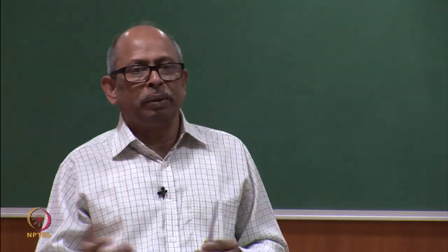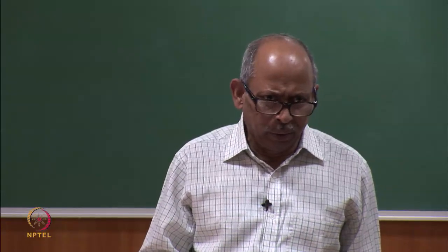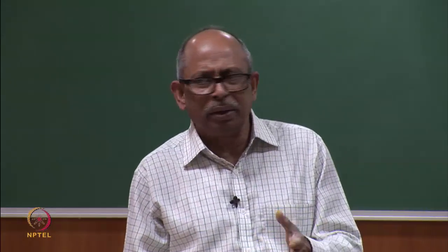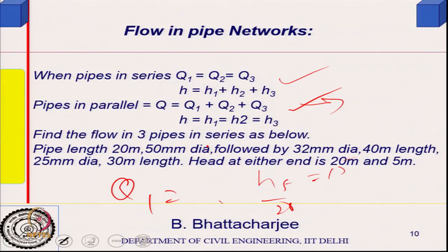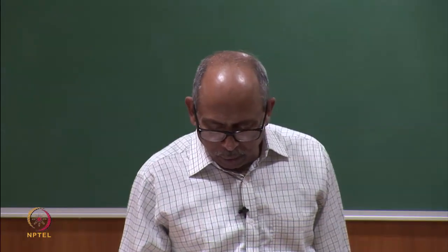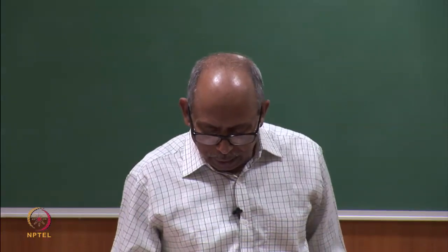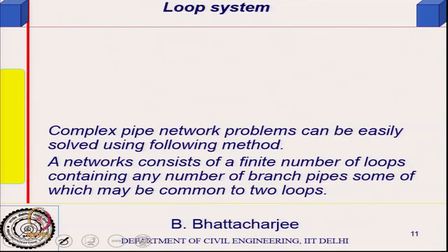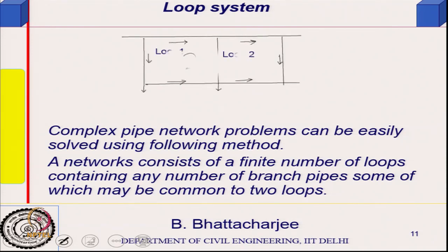There is one solved problem in SP 35 in the appendix along similar lines if you want to look at it. Now, for a complex pipe network with loops — say two loops containing any number of branch pipes, some of which may share common loops — there would be several branches in each loop. Such problems can be solved by applying Kirchhoff's law.